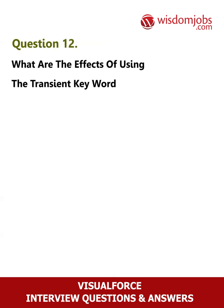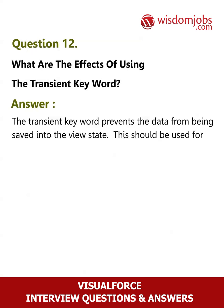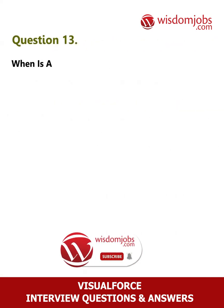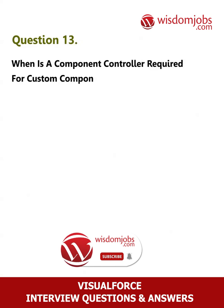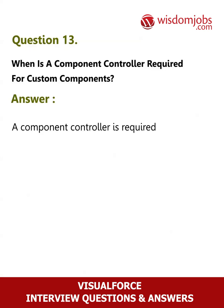Question 12: What are the effects of using the transient keyword? Answer: The transient keyword prevents data from being saved into the view state. This should be used for very temporary variables.